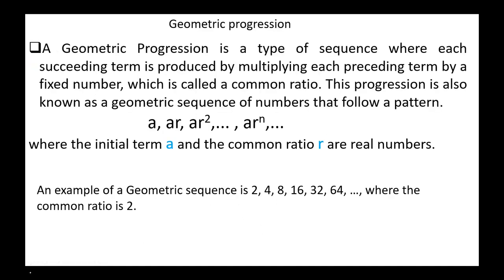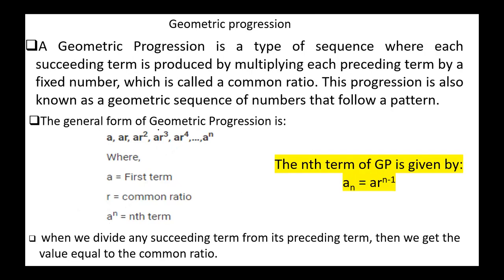Next, geometric progression. A geometric progression is a type of sequence where each succeeding term is produced by multiplying the preceding term by a fixed number called the common ratio. This sequence follows the pattern a, a·r, a·r², ..., a·r^n, where the initial term a and the common ratio r are real numbers. An example is 2, 4, 8, 16, etc., where the common ratio is 2. The n-th term of a geometric progression is given by a_n = a·r^(n−1), where a is the first term, r is the common ratio, and n is the number of the term.